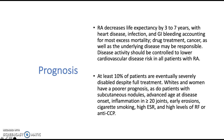Regarding the prognosis of rheumatoid arthritis, the disease decreases life expectancy by 3 to 7 years, with heart disease, infection, and gastrointestinal bleeding accounting for most excess mortality; drug treatment, cancer, and the underlying disease may also be responsible. Disease activity should be controlled to lower cardiovascular risk in all patients, and at least 10% of patients are eventually severely disabled despite full treatment. Poor prognostic factors include white race, female sex, subcutaneous nodules, advanced age at onset, inflammation in more than 20 joints, early erosions, cigarette smoking, high ESR, and high levels of rheumatoid factor or anti-cyclic citrullinated peptide antibody.